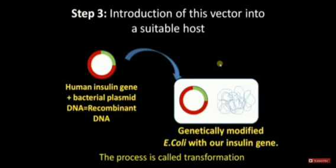We now have our insulin gene incorporated into the vector. We need to introduce this recombinant plasmid into a host — most often a bacterial cell, as it is simple to manipulate. We now have genetically modified E. coli with our insulin gene inserted inside the vector. This process is called transformation.